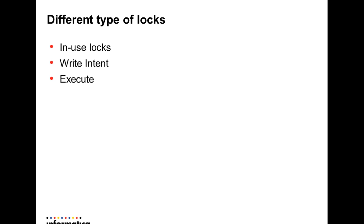These are the different types of Power Center object locks that are placed when objects are accessed through Power Center clients: in-use locks, write intent locks, and execute locks. The in-use lock is placed on an object when it is opened in the workspace — this is a shared lock where multiple users can place it. The write intent lock cannot be placed by more than one user at a time. The execute lock is placed by Power Center on a workflow when the user tries to execute it.